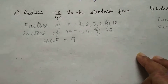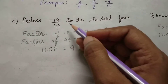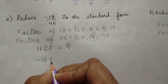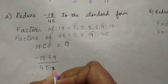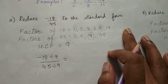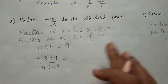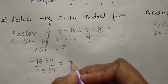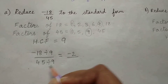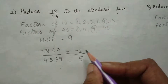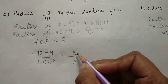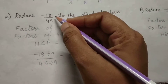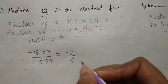After finding out the highest common factor, you have to divide the numerator and denominator by the HCF, that is 9. Divide minus 18 by 9, and 45 by 9. Minus 18 divided by 9 gives minus 2, and 45 divided by 9 gives 5. The denominator is positive and the common factor between 2 and 5 is 1. So I have reduced minus 18 by 45 to the standard form, that is minus 2 by 5.